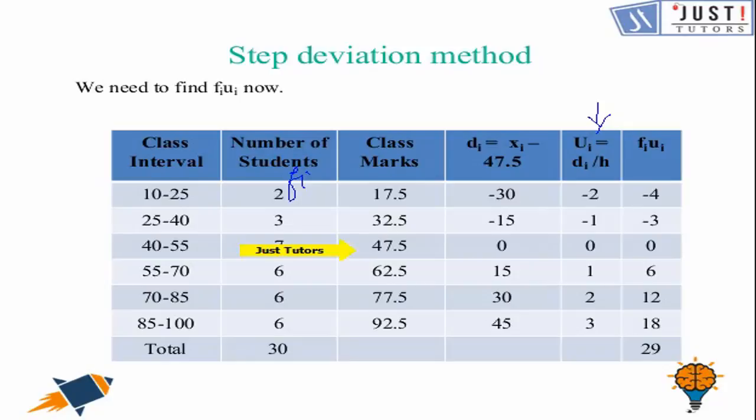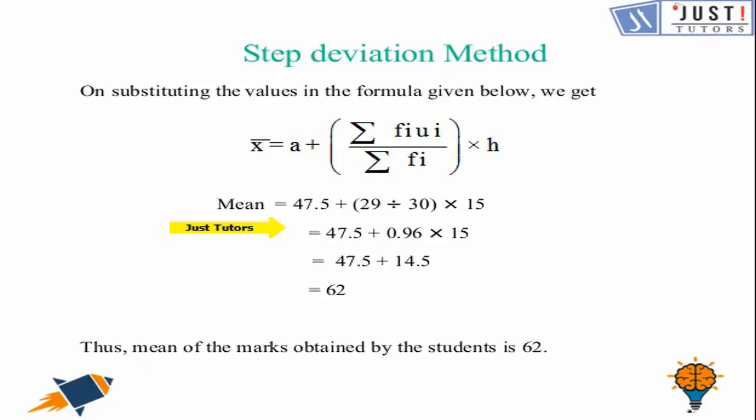So a is 47.5. Sigma fiui is 29. Sigma fi is 30. And h which is class width is 15. So we can put all the values right here in the formula. And we can work out that 62 is the mean of the required table.